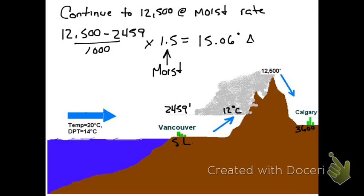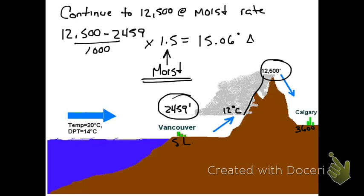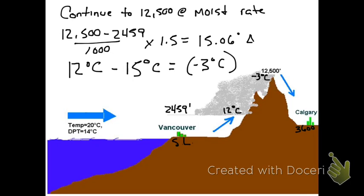From the cloud bases, we continue to the peak at 12,500 feet using the moist adiabatic rate, because we are now in clouds with visible moisture. We take 12,500 minus 2,459 — the height of the clouds — divided by 1,000 to get thousands of feet, then multiply by the moist adiabatic rate of 1.5 degrees Celsius per 1,000 feet. This gives us 15.06 degrees Celsius as the change in temperature from cloud base to the peak at 12,500 feet.